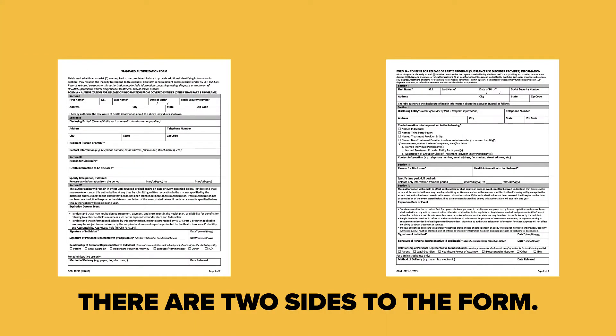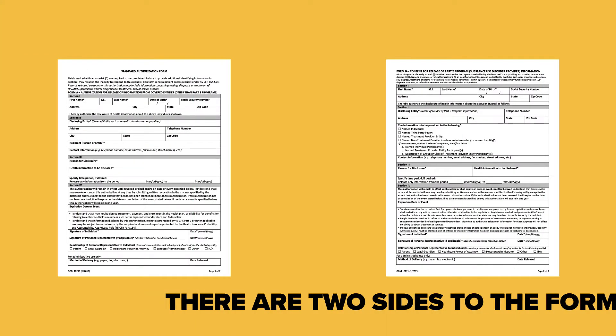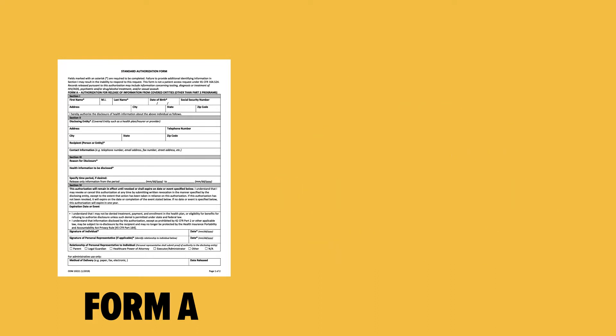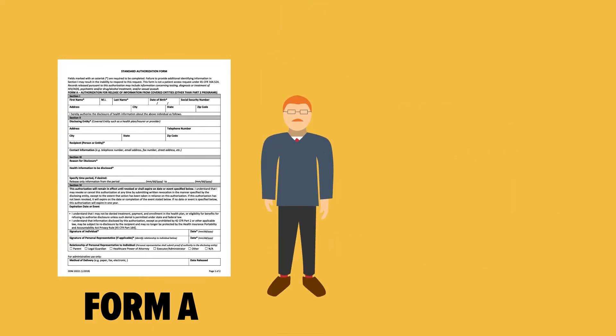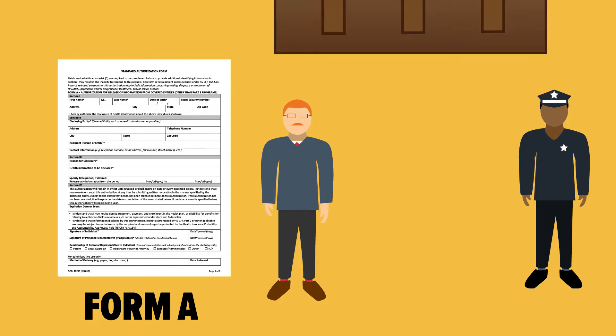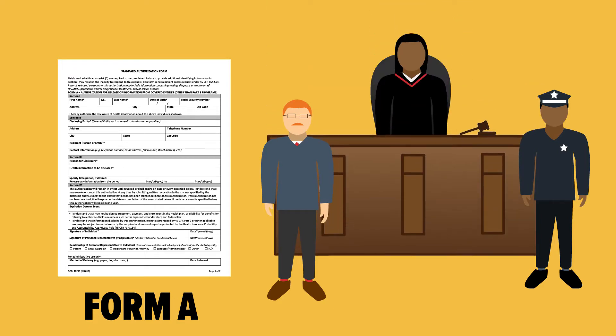There are two sides to the form. Form A is for the release of PHI from covered entities under HIPAA. Several third parties might find this form useful, including attorneys, criminal justice organizations, or court systems, to request information on behalf of an individual.